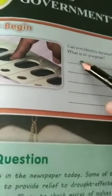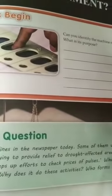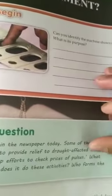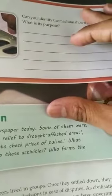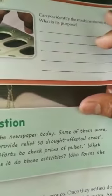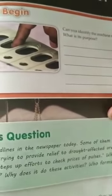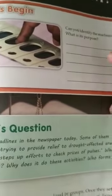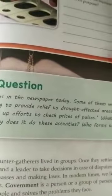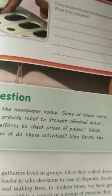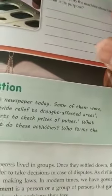What is Government? In the prehistoric time, hunters and gatherers lived in groups. Once they settled down, they required rules and laws to govern them and a leader to take decisions in case of disputes. As civilization developed, kings started ruling the masses and making laws. So in modern time, we have government to lead the country and take decisions. Government is a person or a group of persons that governs a country.